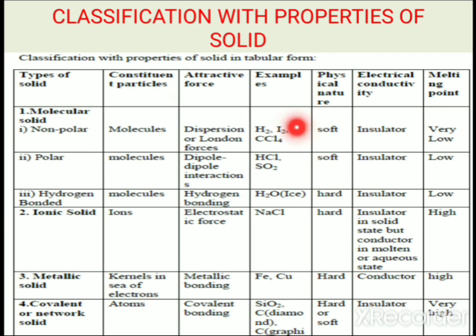Regarding physical properties: nonpolar and polar molecular solids are soft in nature, while hydrogen bonded molecular solids are hard. All molecular solids act as insulators. The melting point for nonpolar molecular solids is very low, low for polar, and also low for hydrogen bonded. Ionic solids are insulators in the solid state but conductors in molten or aqueous state, with very high melting points. Metallic solids are conductors due to the sea of mobile electrons, and have higher melting points. Covalent solids act as insulators and also have very high melting points.